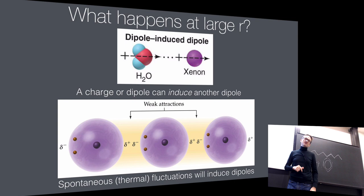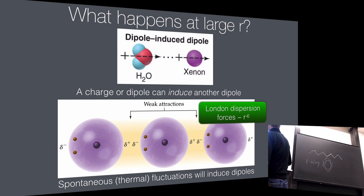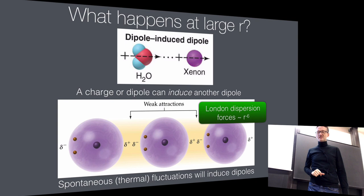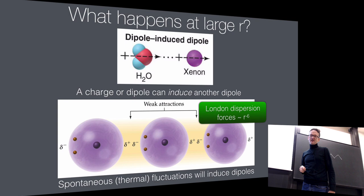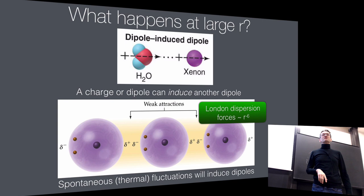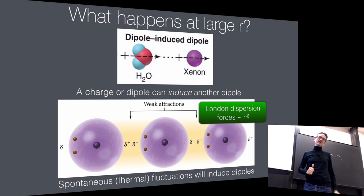Helium doesn't become a liquid until roughly four degrees Kelvin. You can actually prove this without quantum chemistry: London showed that this leads to an interaction with one over R to the sixth inverse power of the distance. This is called the Lennard-Jones interaction. These fluctuating dipole-dipole interactions occur for all atoms — weaker than anything else, but always attractive at large distance, and repulsive at very short distance when electrons start bumping into each other.